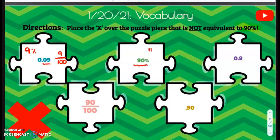90%? Yes. 90 out of 100? Yes. 0.90? Yes, that's 90% because that's 90 out of 100, 90 hundredths.